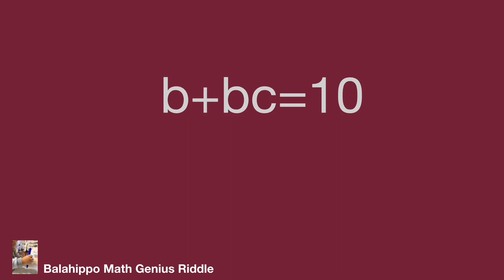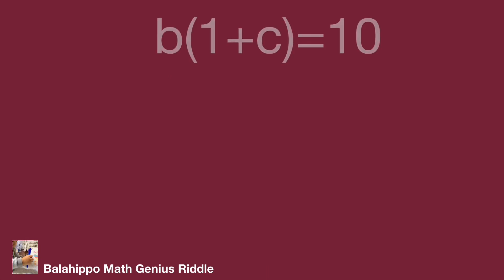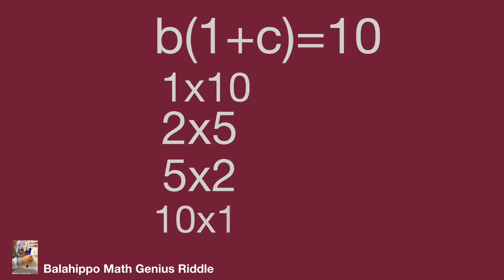Factorize the left side as b times bracket 1 plus c bracket equals 10. If b multiplied by the quantity 1 plus c equals 10, it could be b equals 1 and 1 plus c equals 10, or b equals 2 and 1 plus c equals 5, or b equals 5 and 1 plus c equals 2, or b equals 10 and 1 plus c equals 1.